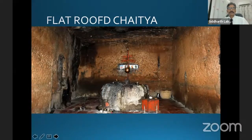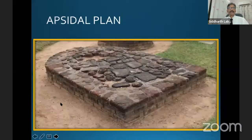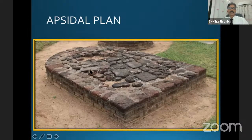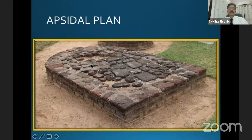This is one of the Chetiyagaras. This is the Apsidal plan I am talking about — it is always in U-shape form. This is a constructed one, not rock cut. We find it in South India. The person is going like this and takes a round around the stupa here. It is broken now and he will come back from the right side. So this is the Apsidal plan.